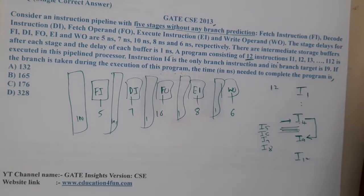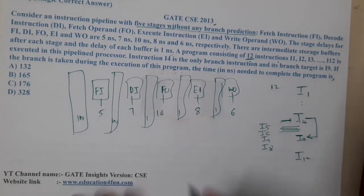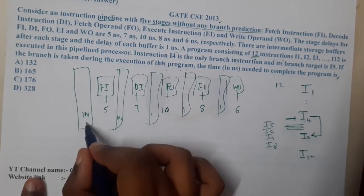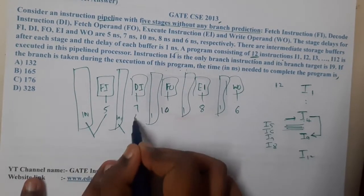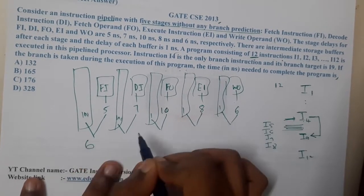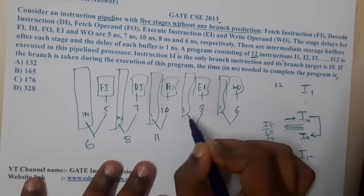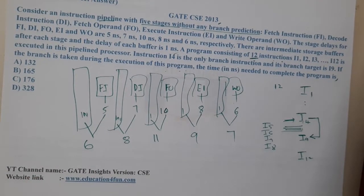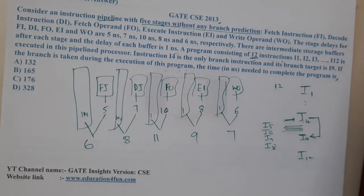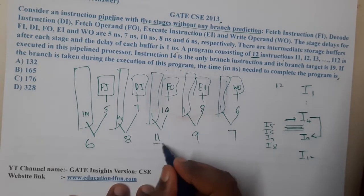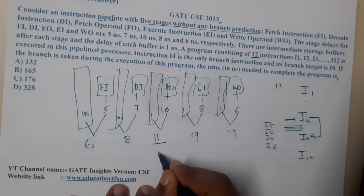This question seems to be an interesting question. They give the total number of instructions and everything has been given. Let us start solving. It is pipelined, so for the stage total time, this is 6, this is 8, this is 11, this is 9, and this is 7. Among all these, which is the maximum number? That number will be our ideal case. What is the maximum number? 11. So the time taken per one instruction we assume as 11.